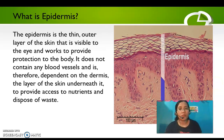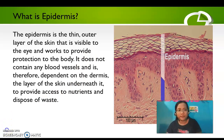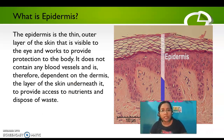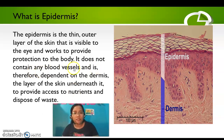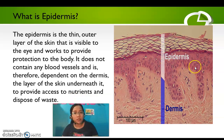Now let's move on to the layers of the human skin. What is the epidermis? The epidermis is the thin outer layer of the skin that is visible to the eye and works to provide protection to the body. It does not contain any blood vessels and is therefore dependent on the dermis to provide access to nutrients and dispose of waste.